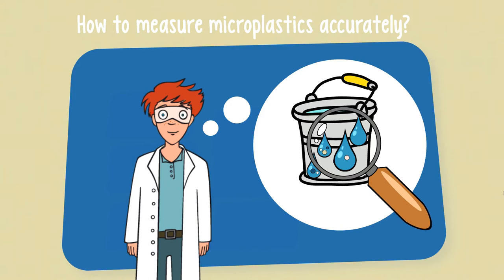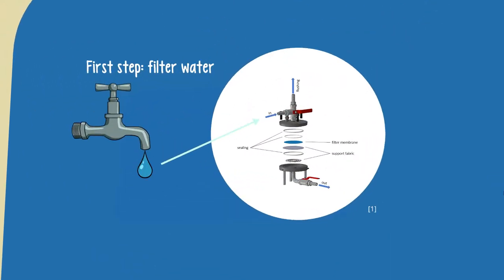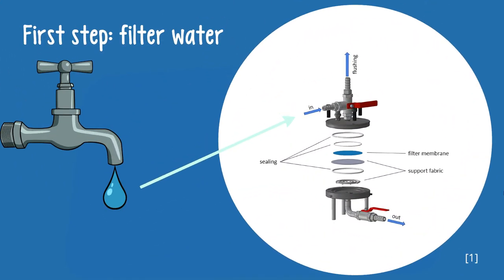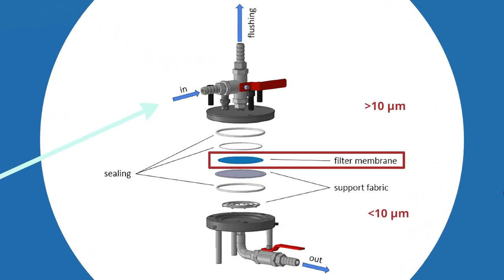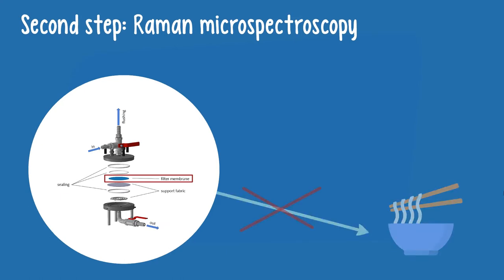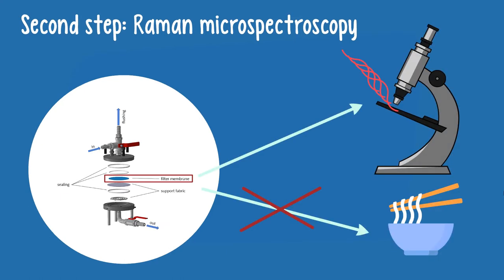Here's what the authors of this paper did. They attached the device to the water tap, which contained a filter that let water and smaller particles through, but retained everything larger than 10 micrometers. Then they analysed the filter using Raman microspectroscopy. This has nothing to do with delicious Asian noodles, but rather with special microscopy for very tiny bits and pieces.